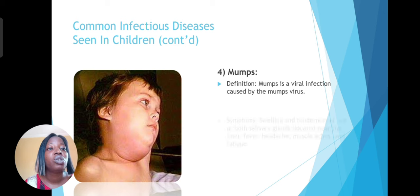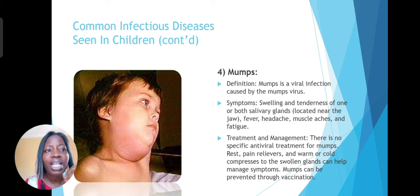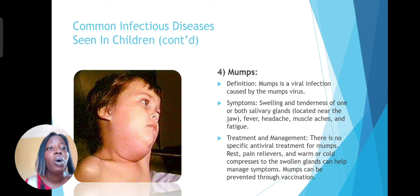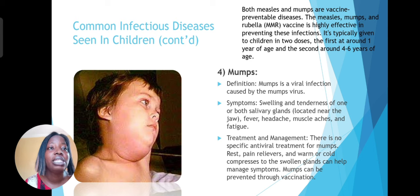Then we have mumps — a viral infection caused by the mumps virus, with swelling and tenderness of the salivary glands, usually accompanied by fever, headache, and muscle aches. There is no antiviral treatment specifically for mumps, but you can take pain relievers, rest, and apply warm or cold compress to reduce the swollen glands. It can be prevented through vaccination. These are what we call vaccine-preventable diseases — measles and mumps. We have the MMR vaccine for mumps and measles, which is very effective and should be given when the child is around one year and again at four to six years.